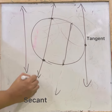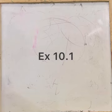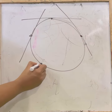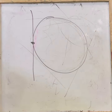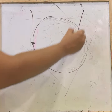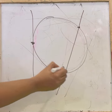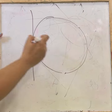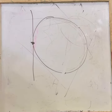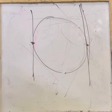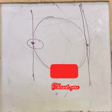This single-point line is called a tangent, while the two-point intersecting line is called a secant. The line segment joining two points on the circle is called a chord. Exercise 10.1: How many tangents can a circle have? Infinitely many. Filling in the blanks — a tangent intersects the circle at only one point; a line intersecting a circle at two points is called a secant; a circle can have at most two parallel tangents; the common point of a tangent and the circle is called the point of contact.